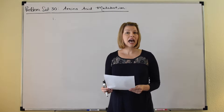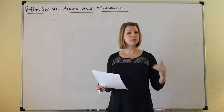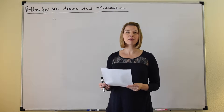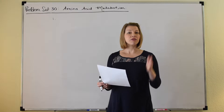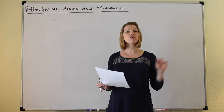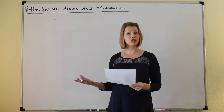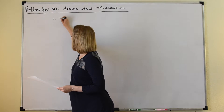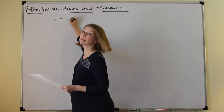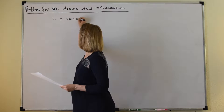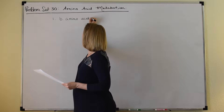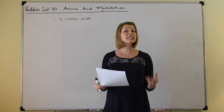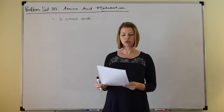Remember that amino acids have the amino group that needs to be removed in amino acid catabolism, and that the first step is to remove that amino group in the process known as transamination. So the answer to number one is B, amino acids. None of the other options A through D contain the amino functional group.